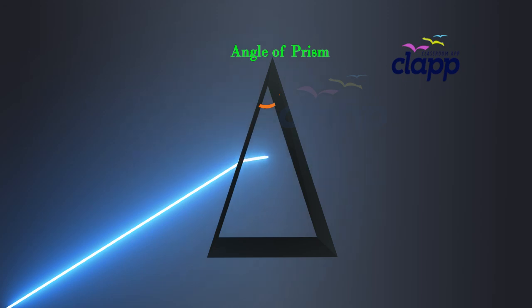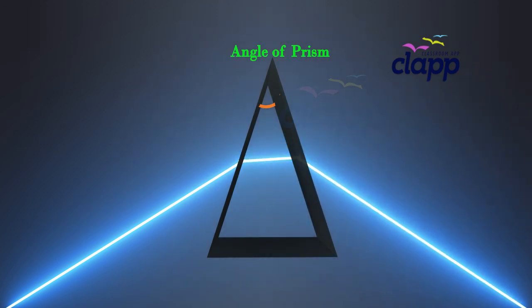Let us now do an activity to study the refraction of light through a triangular glass prism. Fix a sheet of paper on a drawing board. Place a glass prism on it in such a way that it rests on its triangular base. Trace the outline of the prism using a pencil. Name each corner as A, B, and C.